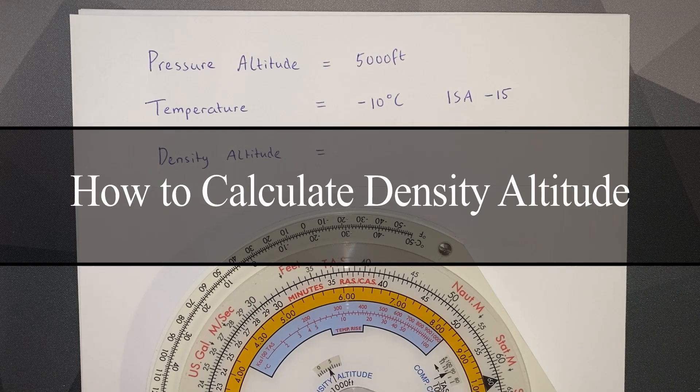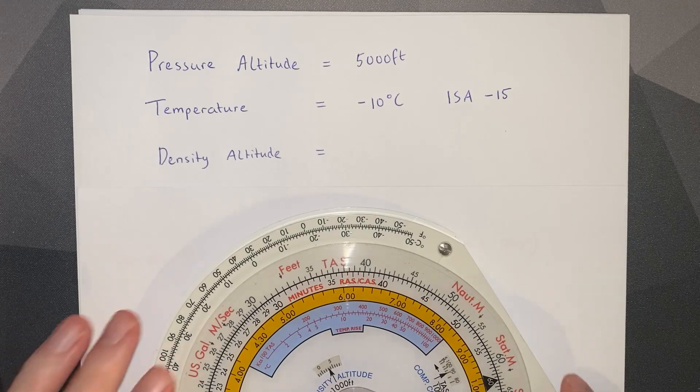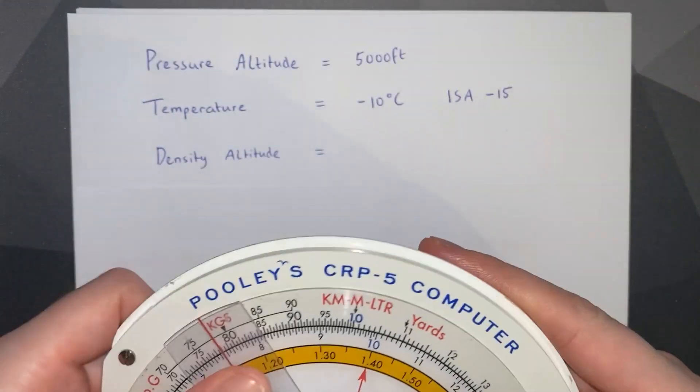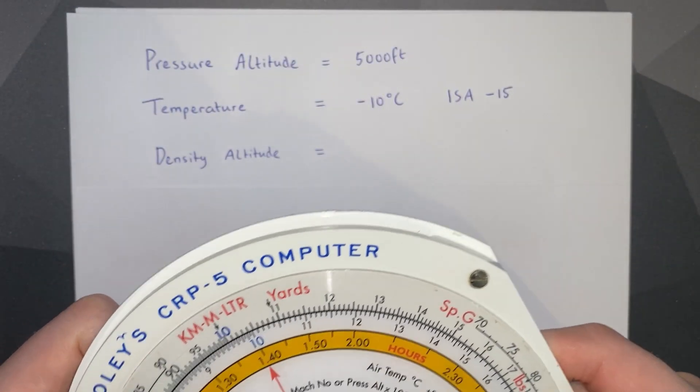This is a quick video showing two different methods of calculating density altitude. One is using our CRP5 and the other will be a formula.